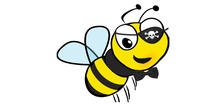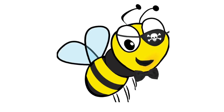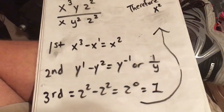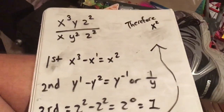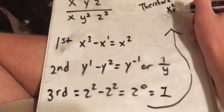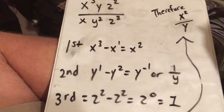Now back to your regularly scheduled algebraic lesson. He he he he. And then after persevering through those three steps, you'll come to the realization that the answer was simply x squared over y.